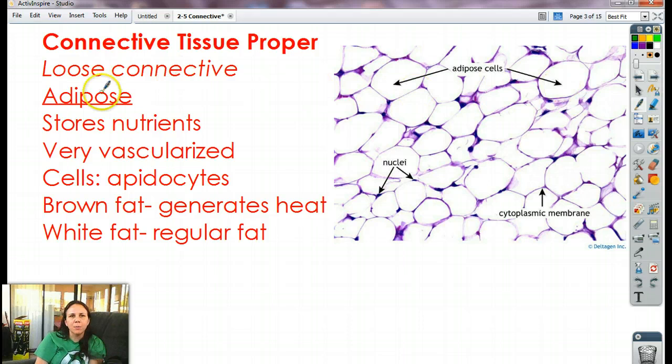Okay, the second type of loose connective tissue is adipose. I love adipose tissue because I love the way it looks under the microscope. Adipose, otherwise known as fat. As you guys know, its job is to store nutrients. It is very vascularized, it has lots of blood vessels in there. Cells are called adipocytes. So the adipo has to do with adipose, and then the cyte means cell.